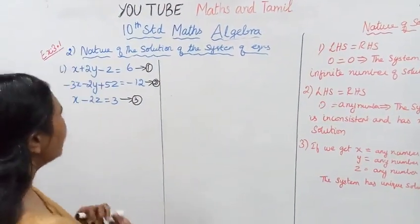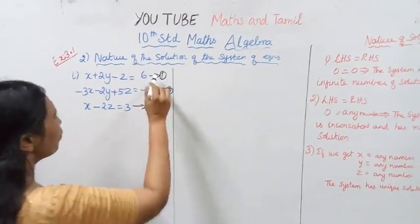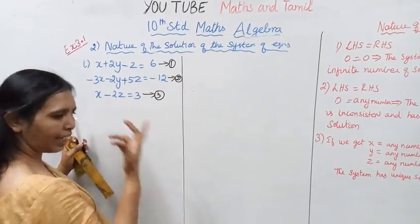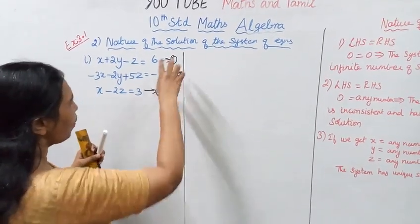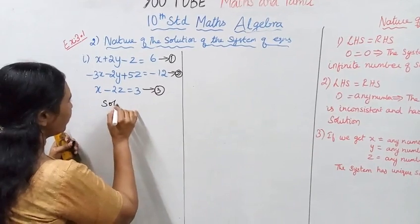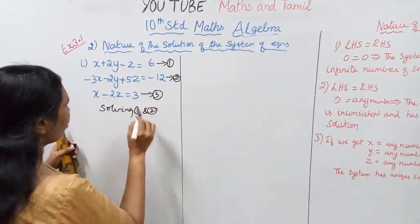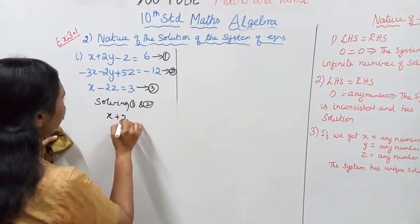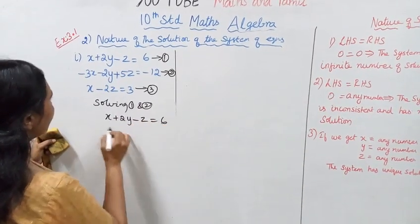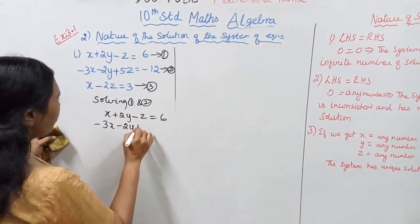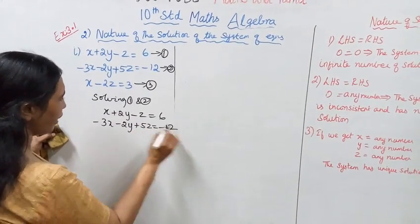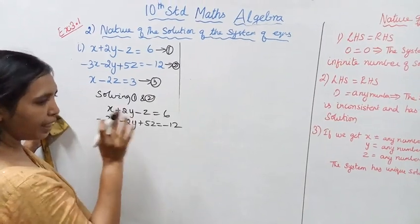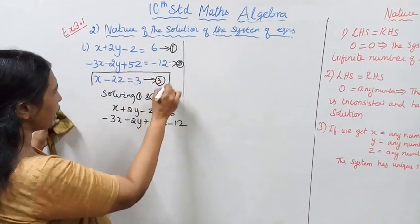Now let's go. We have three equations here. The equations are: x plus 2y minus z equal to 6, minus 3x minus 2y plus 5z equal to minus 12, and x plus 2y minus z equal to 6.